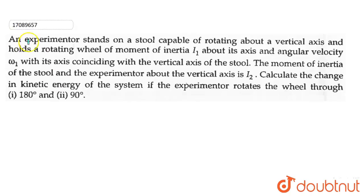In this question, an experimenter stands on a stool capable of rotating about a vertical axis and holds a rotating wheel of moment of inertia i1 about its axis and angular velocity omega1 with its axis coinciding with the vertical axis of the stool. The moment of inertia of the stool and the experimenter about the vertical axis is i2.